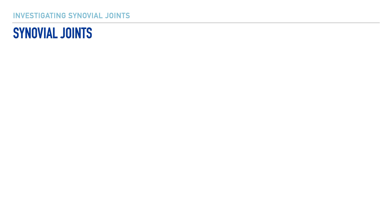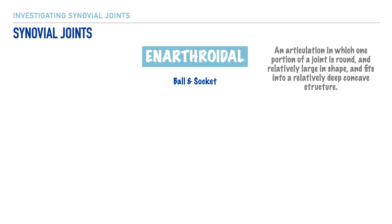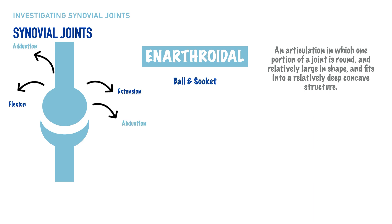Next up is the inarthroidal joint, commonly known as a ball and socket joint. This refers to a relatively large rounded structure fitting into a deep concave structure. Comparing it to the condyloid joint: the condyloid joint has a relatively shallow concave component, whereas the inarthroidal joint has a relatively deep concave component. Because of this deeper concave component, a greater degree of motion is possible — specifically flexion, extension, abduction, adduction, as well as internal and external rotation.